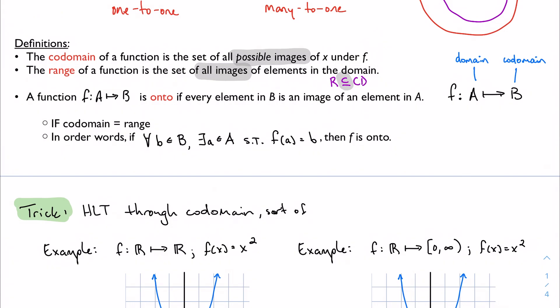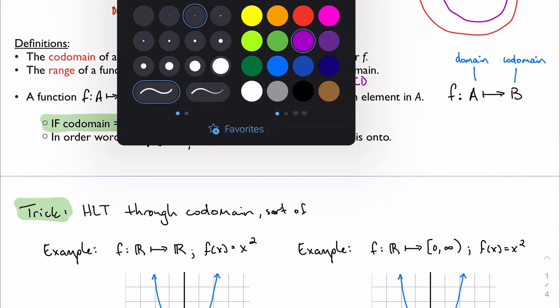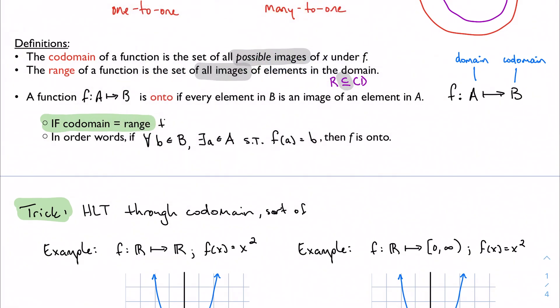The way this works, and the trick here, is if the codomain is equal to the range, then my function is onto. The math way of saying it is here, and it's a little bit scary looking, but it's not too bad.